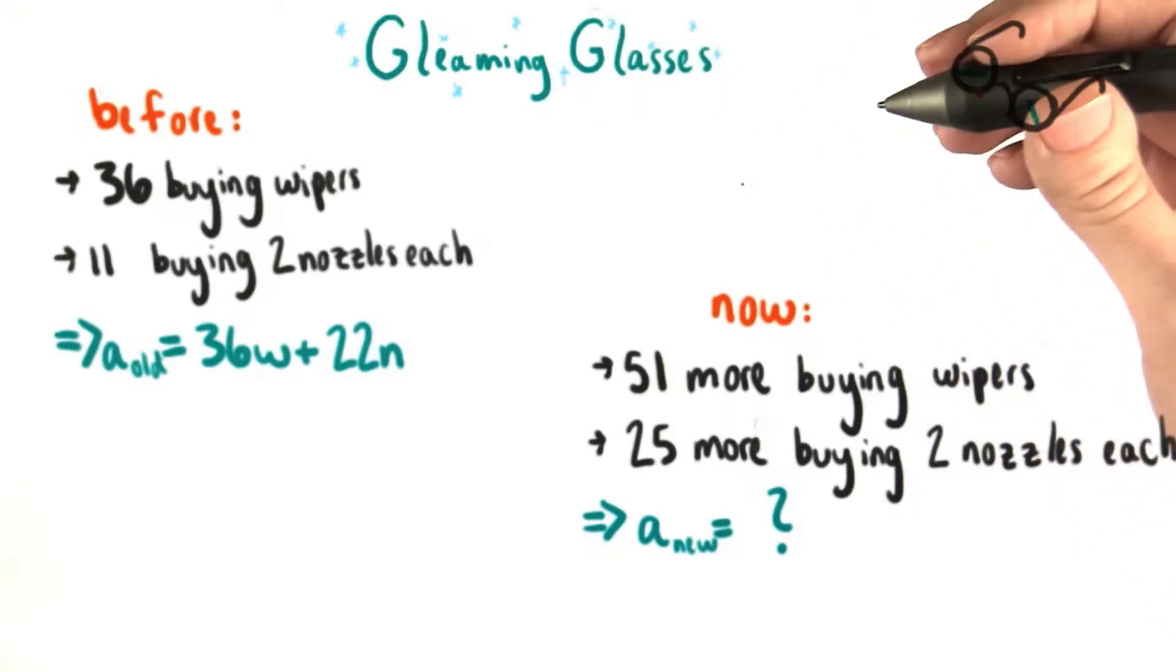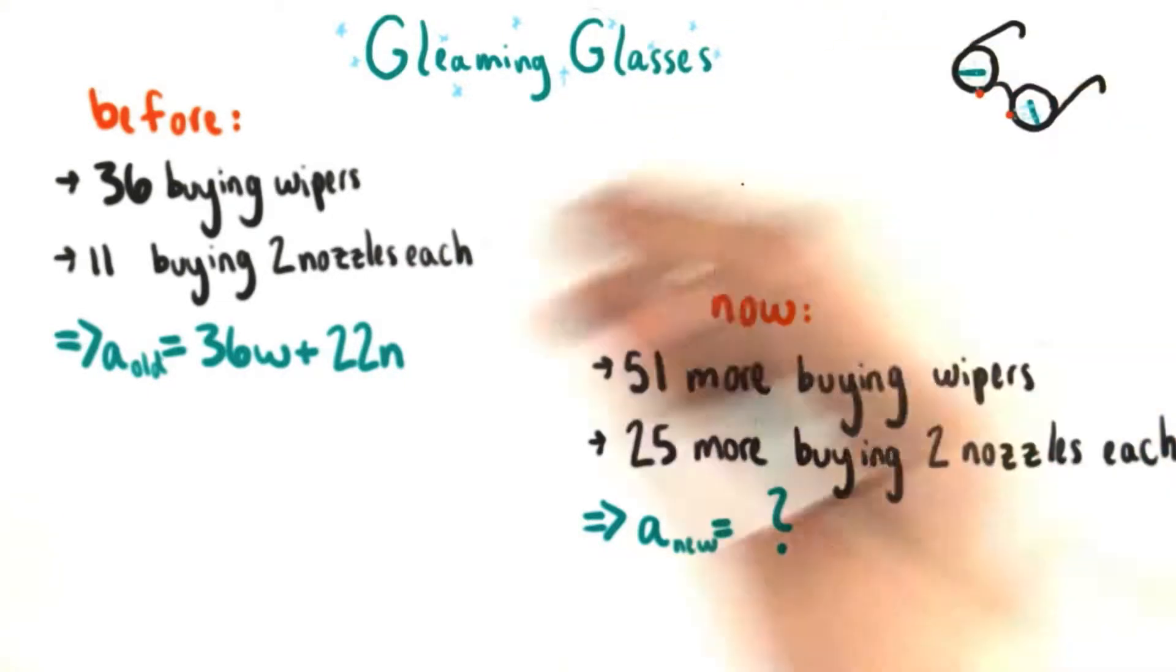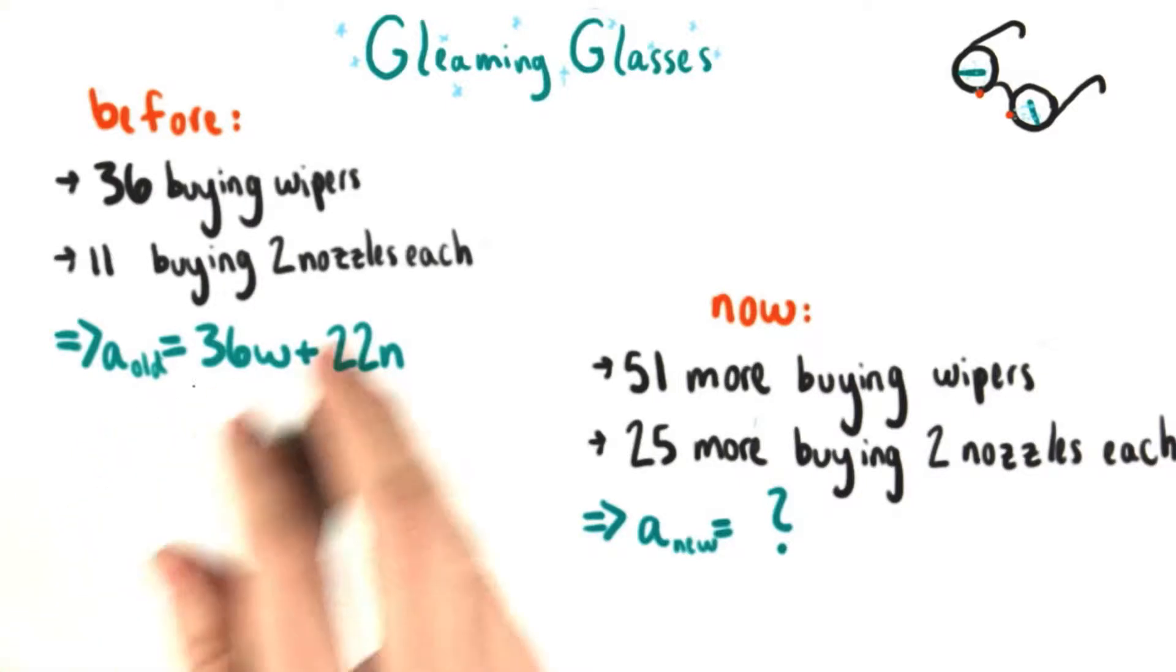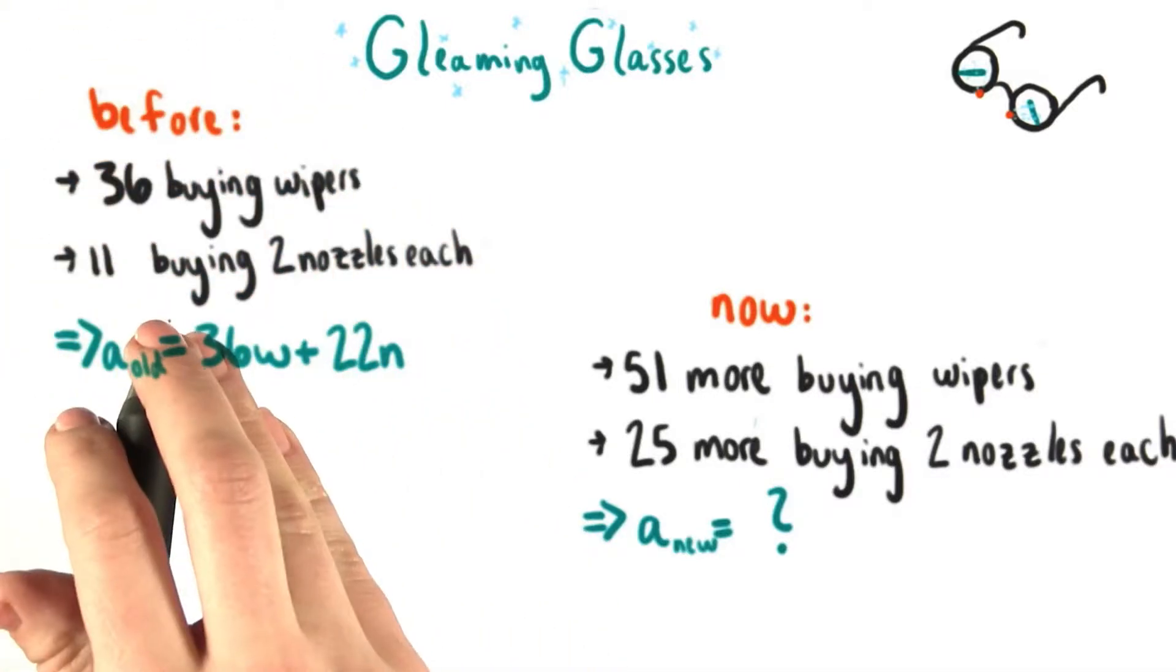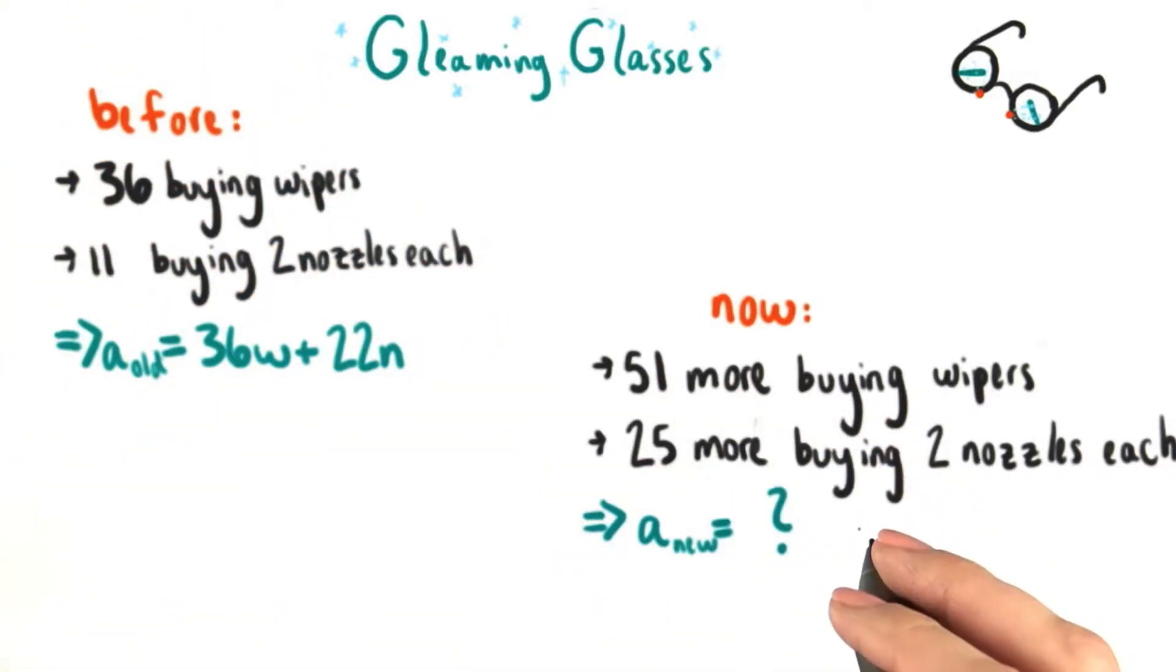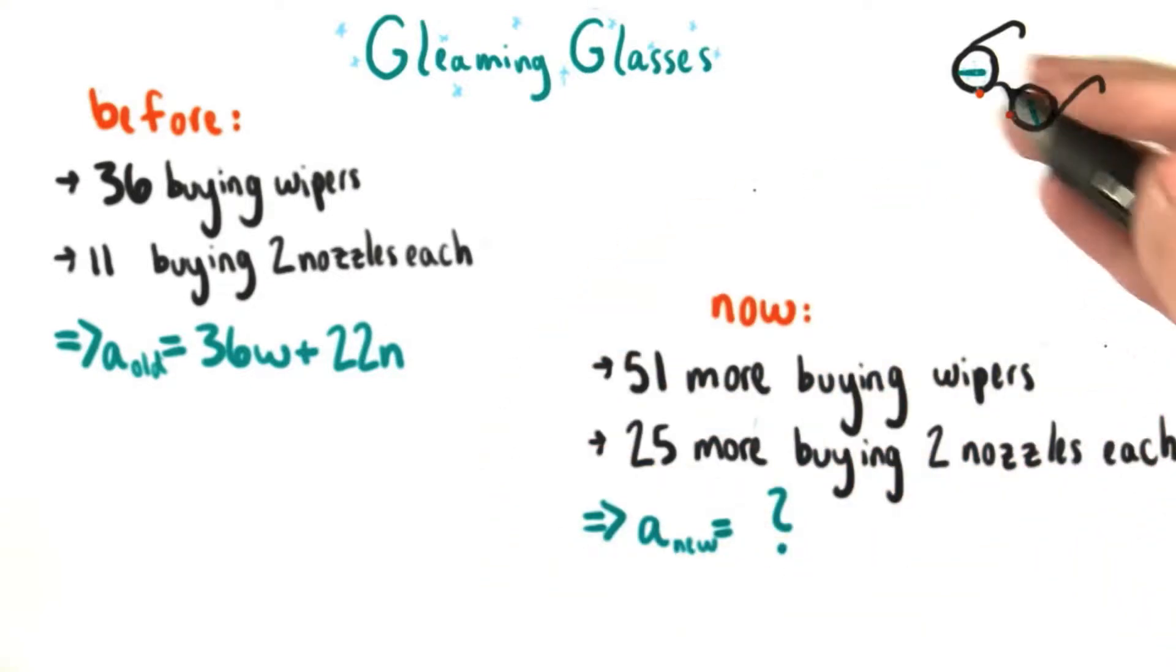We can think about Grant's sales story so far as having two situations: the situation after the first day, which I'm going to call the before picture, and the situation after the second day of selling, which is the present situation we're concerned with.